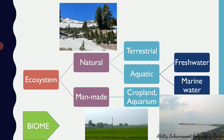Manmade ecosystems include a field, a farmland, a cropland, an aquarium, or a small swimming pool. Anything that has arisen due to human activities and is artificially made is called a manmade ecosystem.